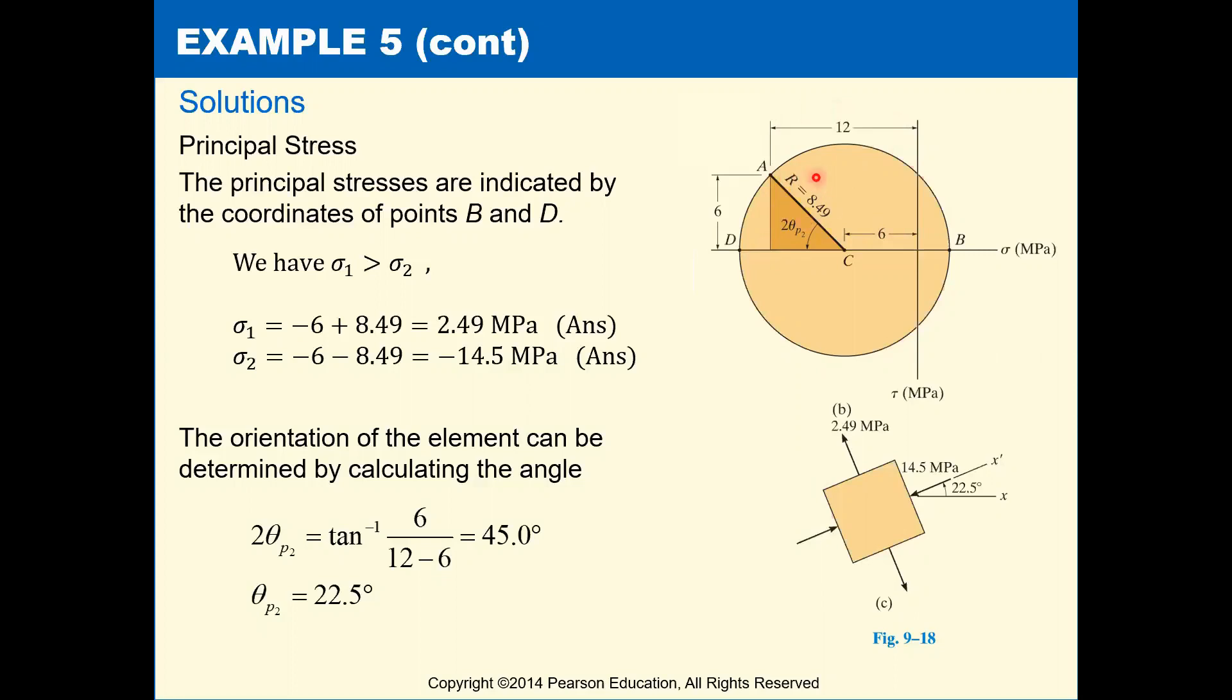If we know our center and we know our radius, then we can calculate our principal stresses here, where sigma 1 is our center plus our radius and sigma 2 is going to be our center minus our radius.